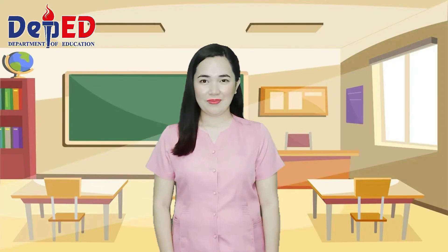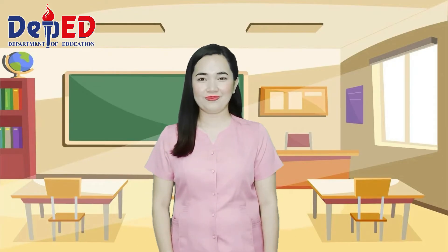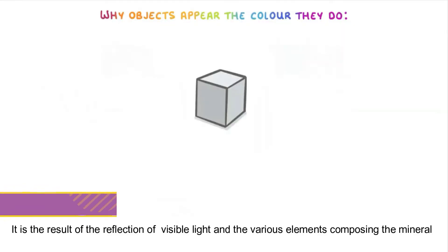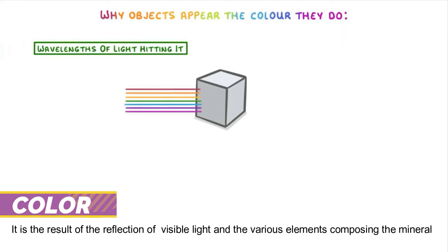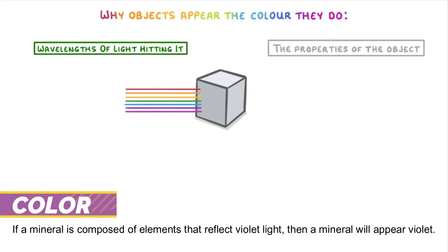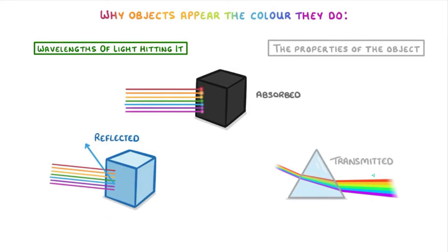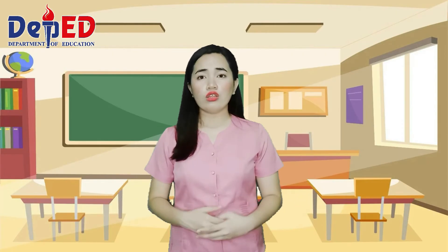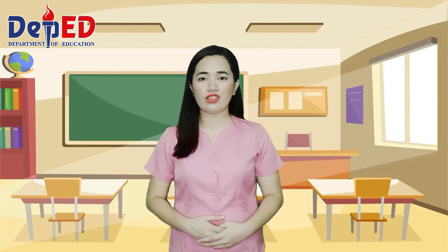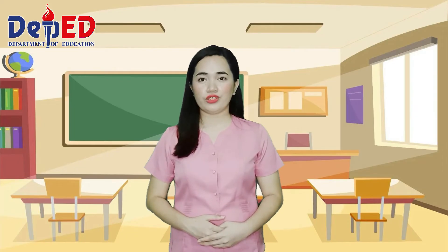How does a mineral gain its unique color? It is the result of the reflection of visible light and the various elements composing the mineral. If a mineral is composed of elements that reflect violet light, then the mineral will appear violet. However, color is not an effective indicator of a mineral, as it comes with different colors, which brings us to the next property.